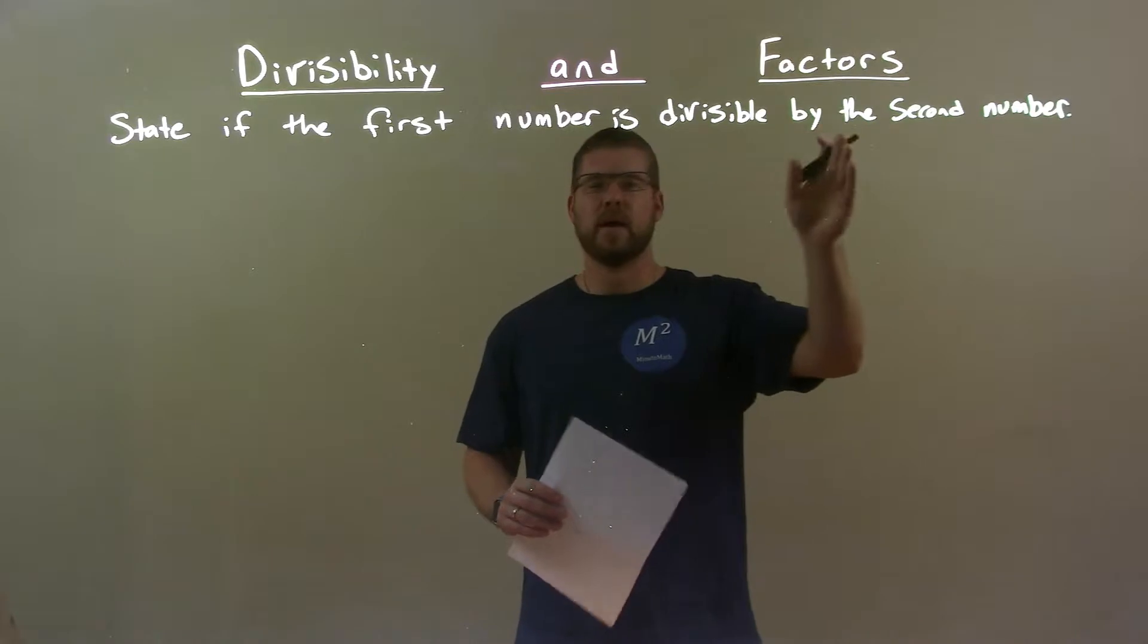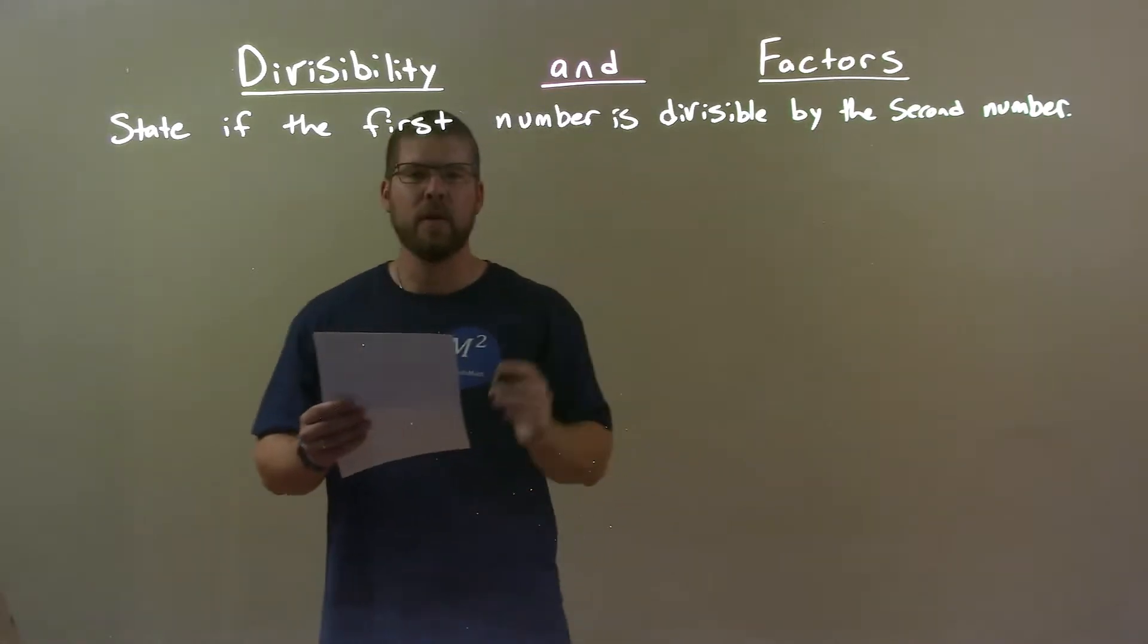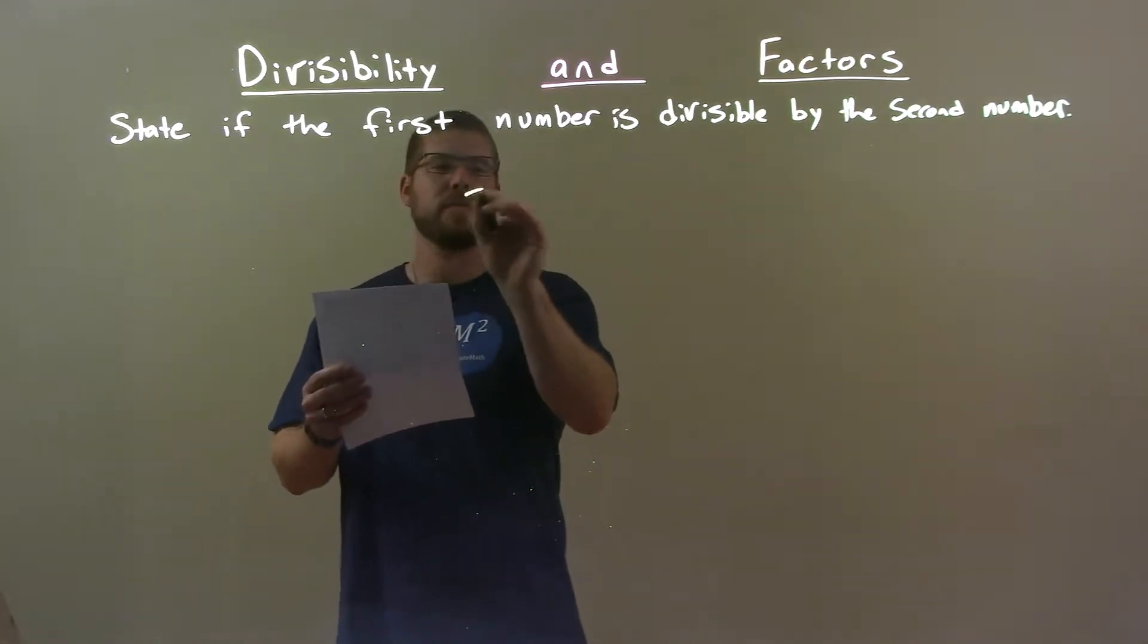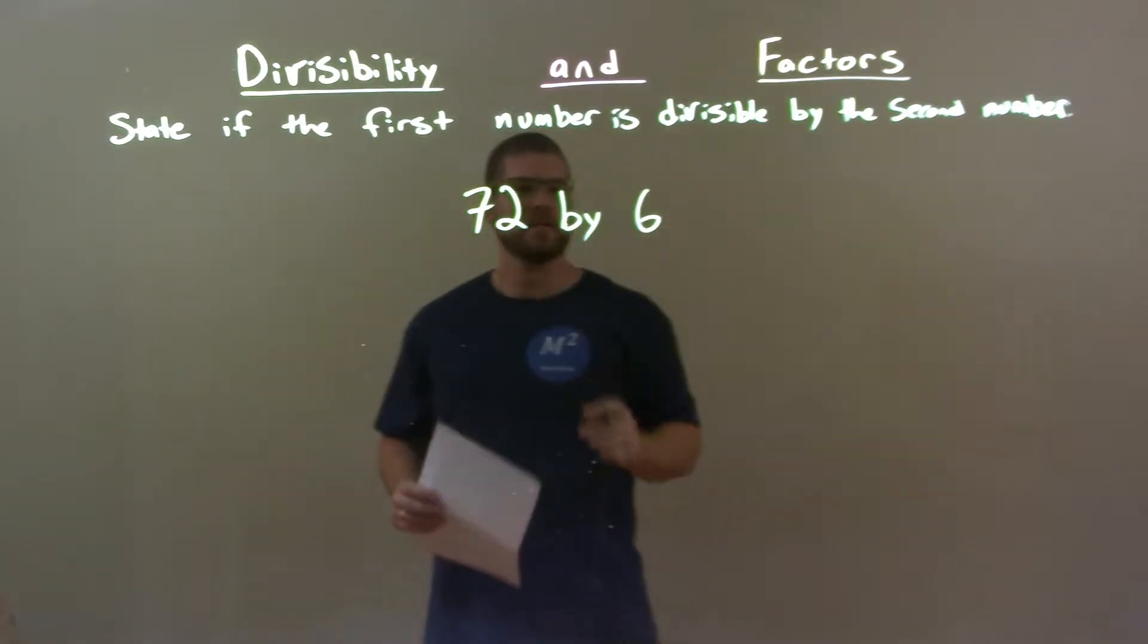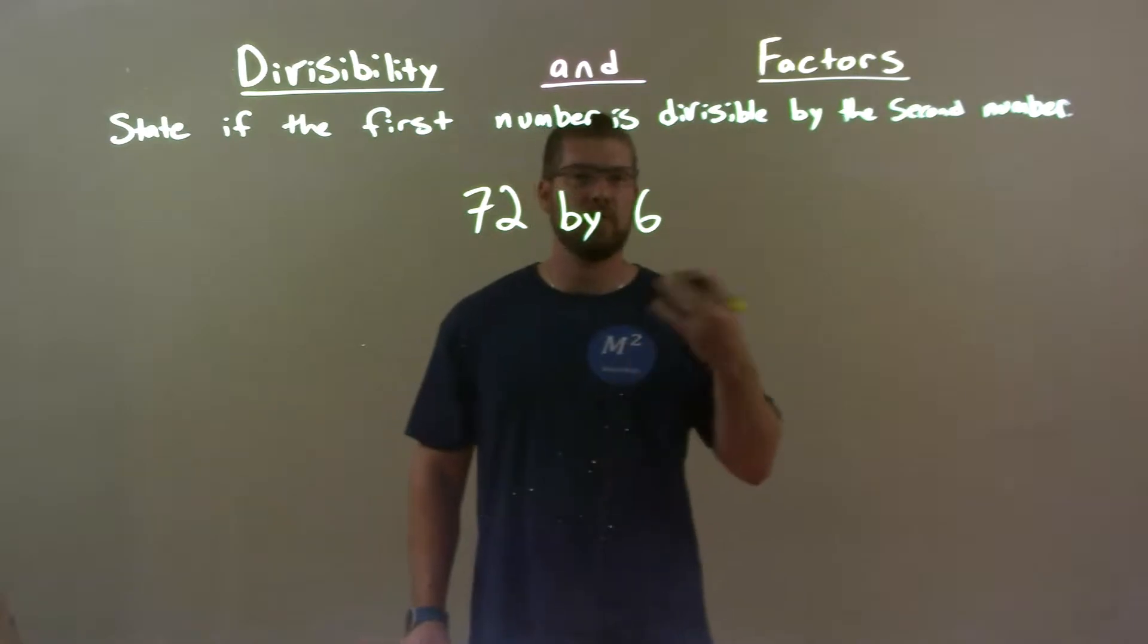The first number is divisible by the second number. So, if I was given these two numbers, 72 by 6. Well, first thing I check here is, does 6 go into 72 evenly?